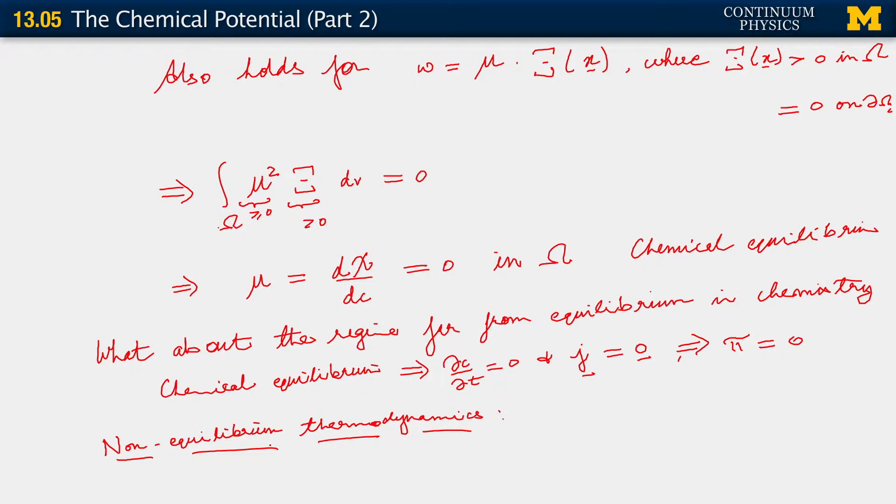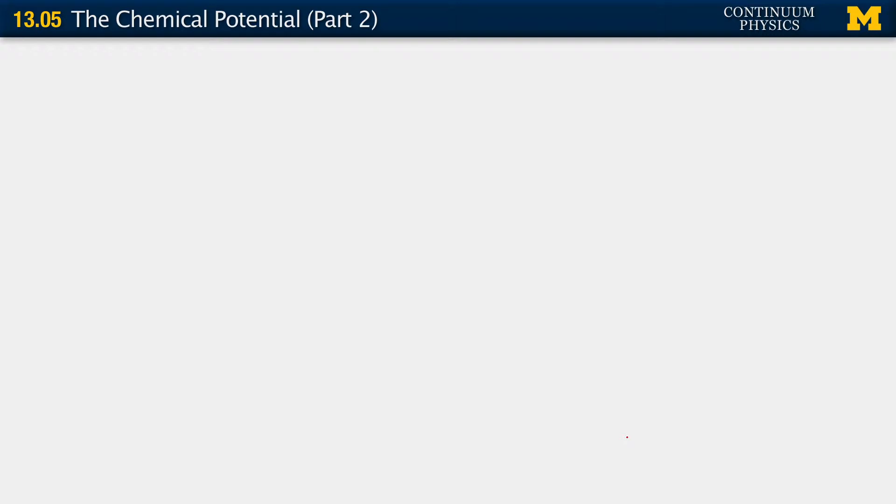And that is where we write down the flux. In the context of non-equilibrium thermodynamics, the flux is equal to minus the gradient of the chemical potential. We want to have some material constant, so typically, we will say that there is a mobility tensor. J equals minus M gradient mu where M is the mobility tensor.